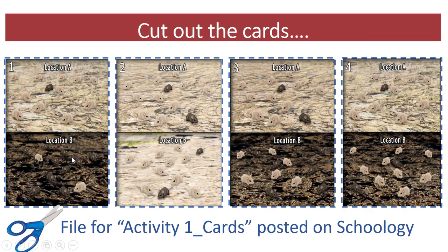It may be challenging to order the cards by just looking at the screen, so I posted the cards as a file on Schoology. If you choose, you can print out the four cards, cut them apart using scissors, and move them around at home to experiment with different orders. Once you have the order you think best shows the evolution of these mice, write the number order on your journal slip and make sure you justify why you think this order is the correct one.